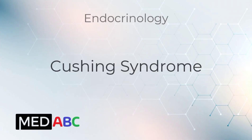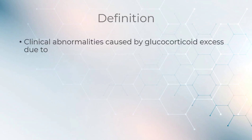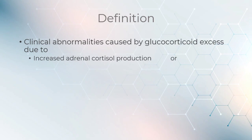Welcome to our endocrinology series. This video is on Cushing syndrome, defined as clinical abnormalities caused by glucocorticoid excess due to increased adrenal cortisol production or long-term glucocorticoid therapy.